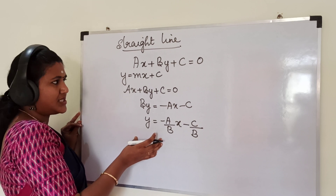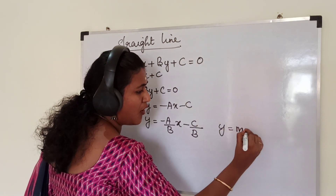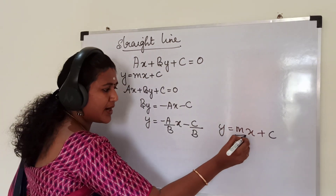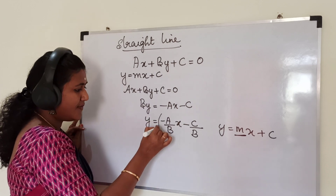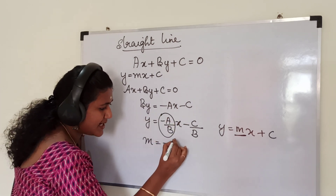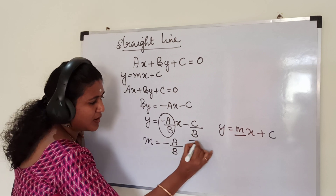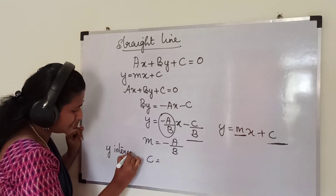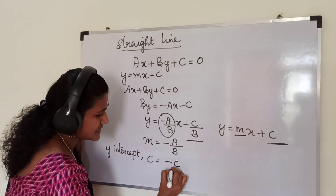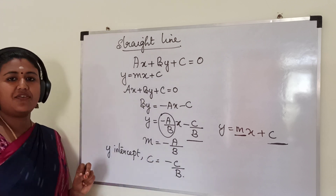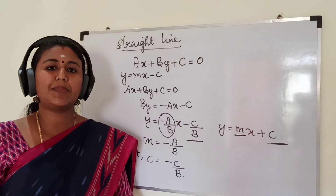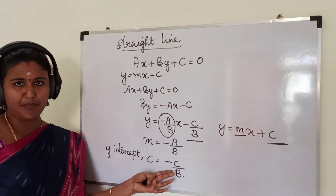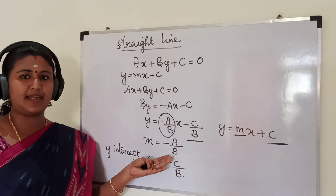Now compare this equation with the slope-intercept form. We will get slope and Y intercept. Comparing the coefficient of X in both, we get slope M is equal to minus A by B, and the constant term is nothing but the Y intercept. So Y intercept C is equal to minus C by B. If the general form is given, we can find slope and Y intercept using these formulas: slope is minus A by B and Y intercept is minus C by B.